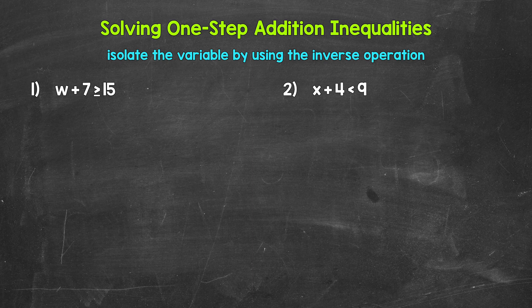Let's jump into number one, where we have w plus seven is greater than or equal to 15. We need to isolate that variable of w. We are adding seven to w, so we need the inverse operation of addition.